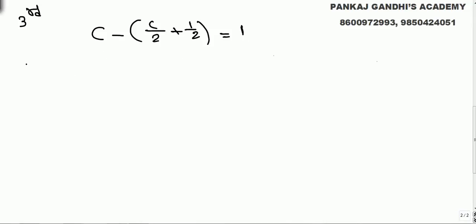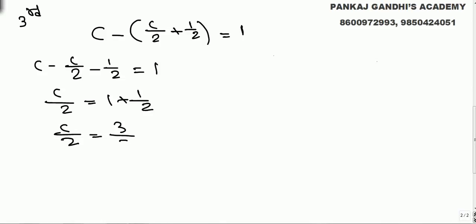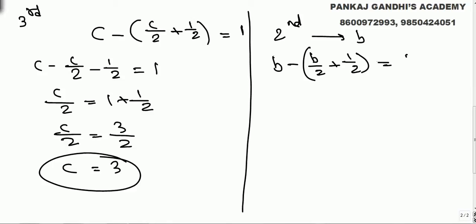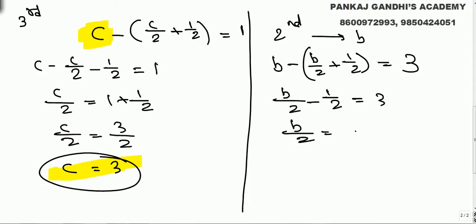Solving: c minus c/2 minus 1/2 equals 1, so c/2 minus 1/2 equals 1, giving c/2 equals 3/2, so before meeting the last guard he had 3 oranges. Now before meeting the second guard he had b. Out of b he gave b/2 and half to the second guard, and remaining was 3 before meeting the third guard.